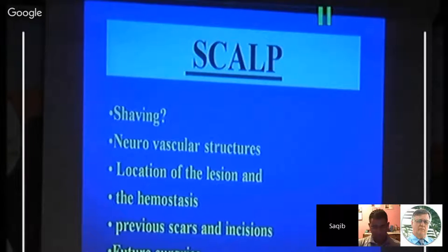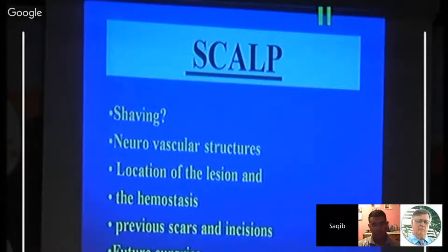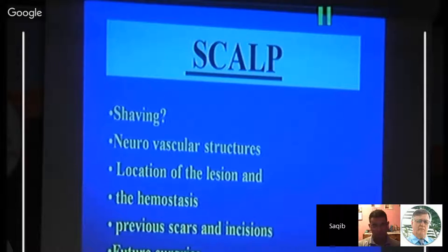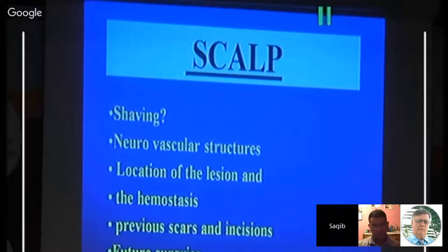Consider the neurovascular structures you need to protect — your incision should account for which vascular structures are being compromised and where the blood supply to the flap will come from. Always place your incision almost on top of the lesion to make the most direct and shortest pathway. Consider hemostasis, the blood supply, previous scars in the area, and plan to modify your incision accordingly. Also keep in mind that you may need to extend the incision intraoperatively or plan for future surgeries.